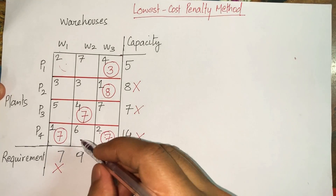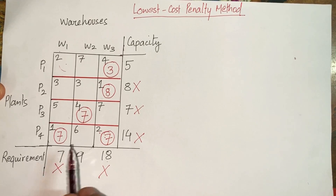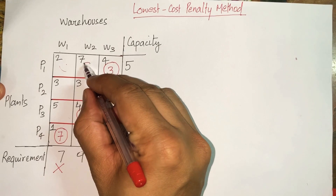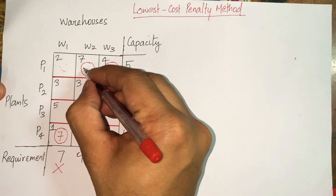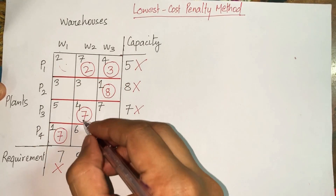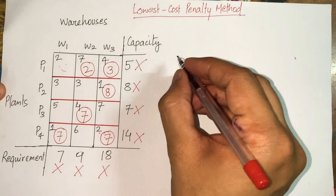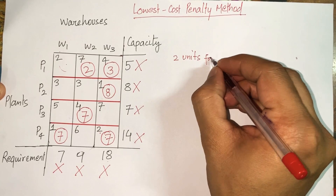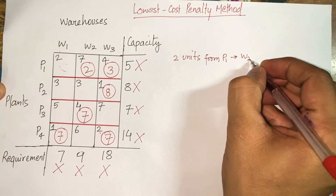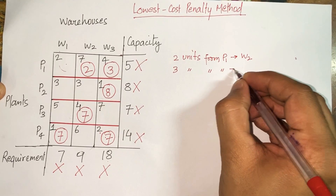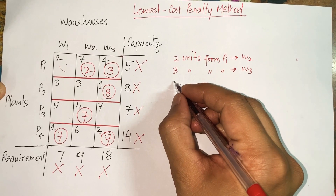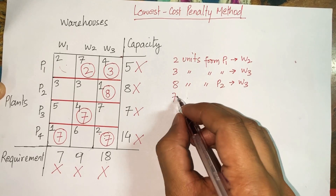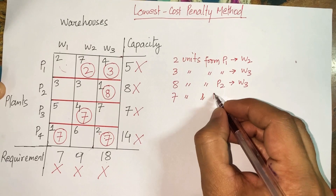Looking at the remaining cost-6 cell, P4 has nothing left to give so no allocation is made there. Moving to the cost-7 cells, P3 is also exhausted. The only remaining supply is 2 units with P1, and W2 still requires 2 more units, so 2 units are allocated from P1 to W2. P1 had capacity 5: 3 went to W3 and 2 go to W2, totalling 5. W2 had requirement 9: 7 from P3 plus 2 from P1 equals 9. All demand is satisfied.